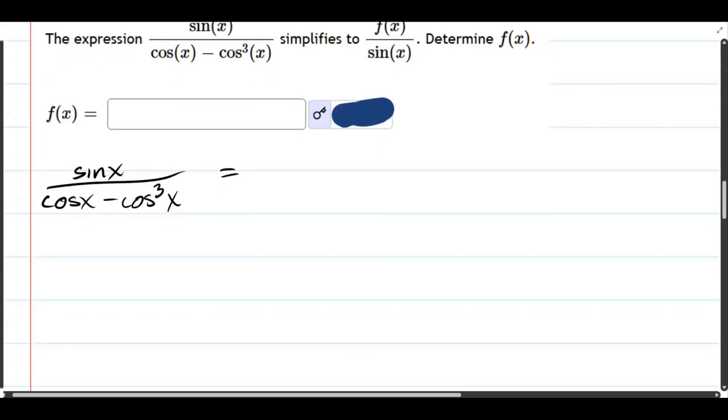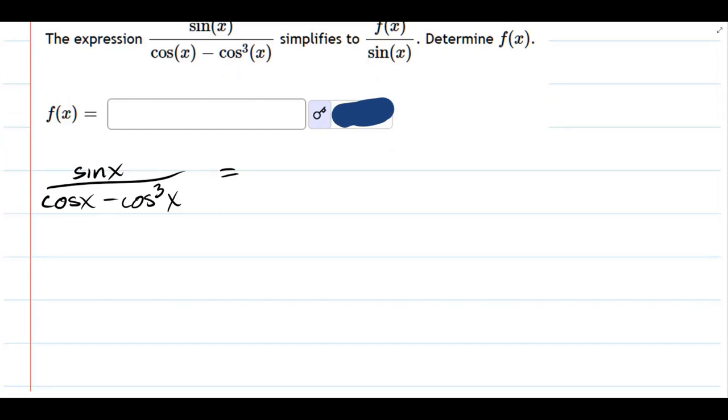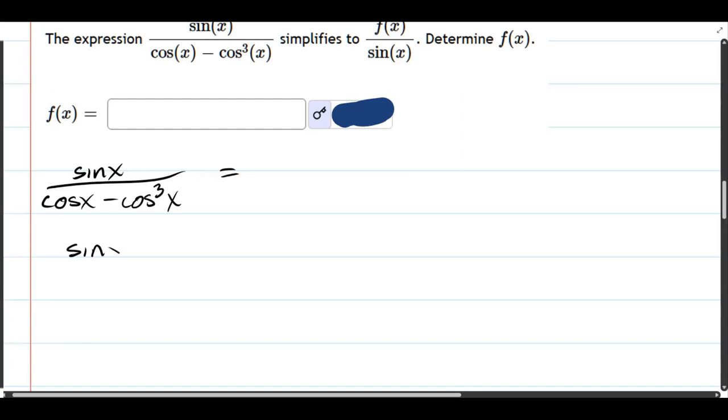I see cosine and cosine in the bottom. So we have sine still at the top. Denominator, we have cos times 1 minus cos squared.